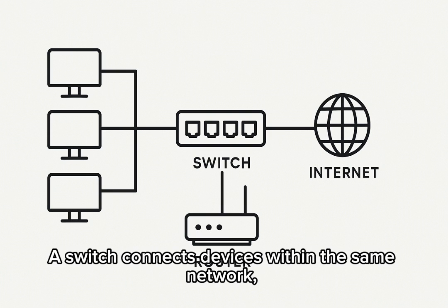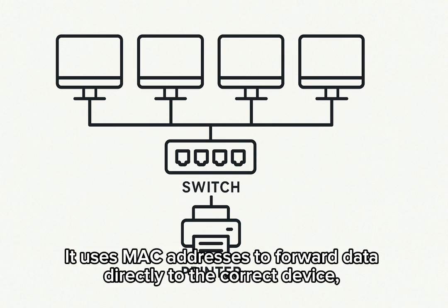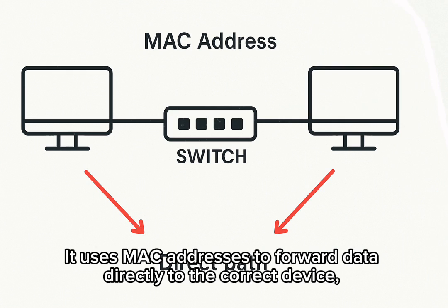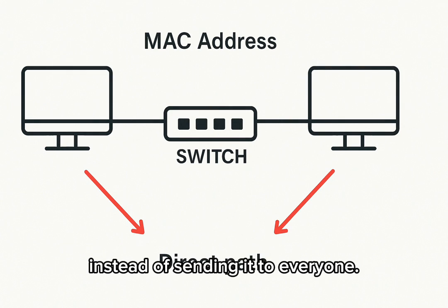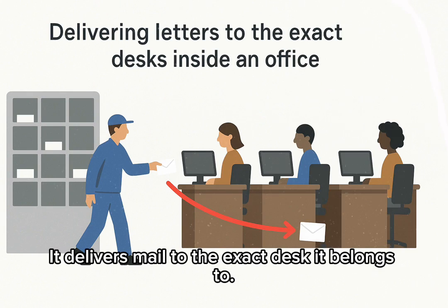A switch connects devices within the same network, like computers, printers, or servers. It uses MAC addresses to forward data directly to the correct device, instead of sending it to everyone. Think of a switch like a mail sorter in an office — it delivers mail to the exact desk it belongs to.